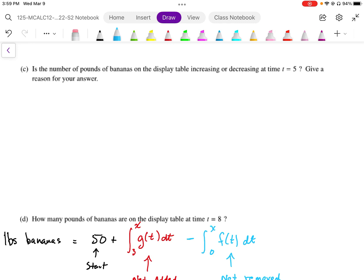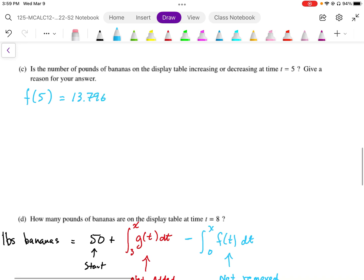So we want to just plug in into our calculator. We can either use that function, we can just use a calculator calc value function, and we want to find f of t at 5. And when we plug that in, we're going to end up with 13.7959, so I'm going to write that 796, and this is going to be pounds per hour. And that's decreasing since they're taking it away.